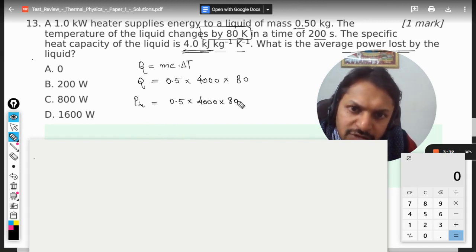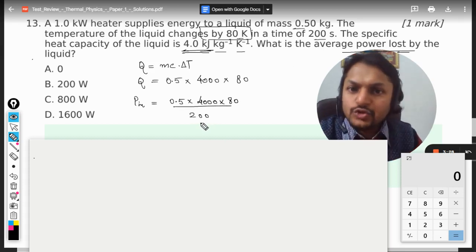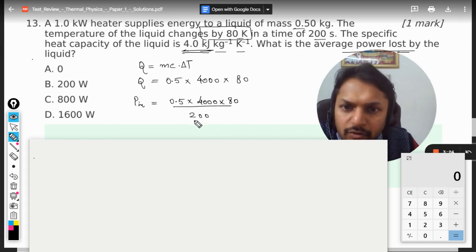That is 200 seconds, and this is the power input. Now we have to divide this. Let us remove this zero, keep it here, so this cancels out here.